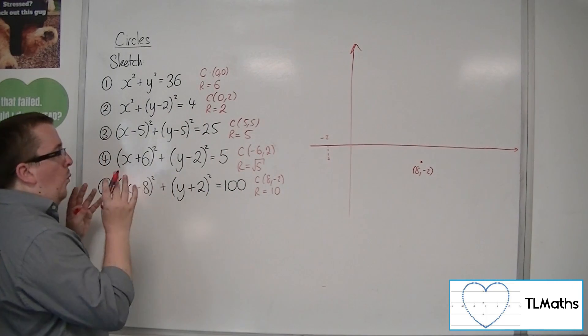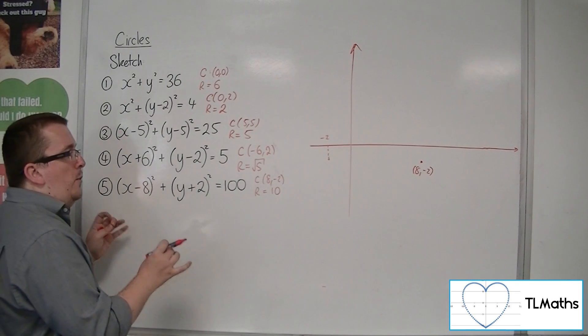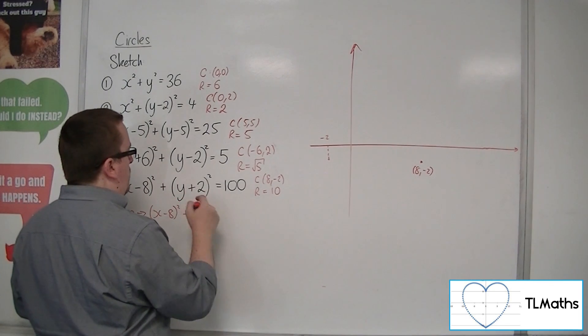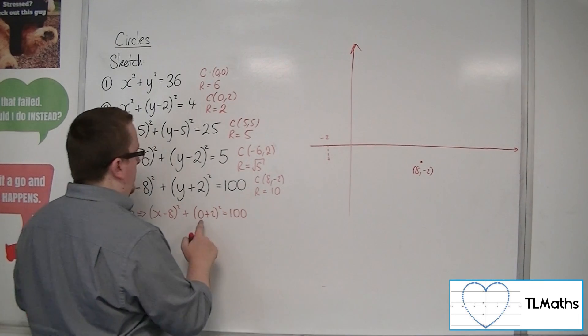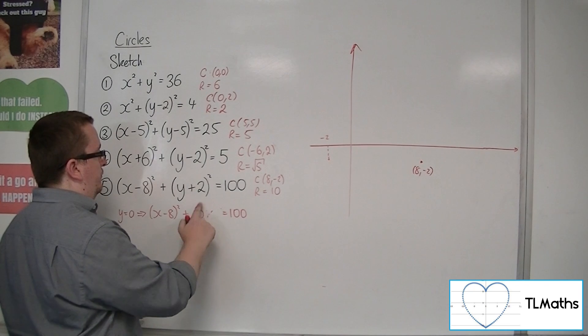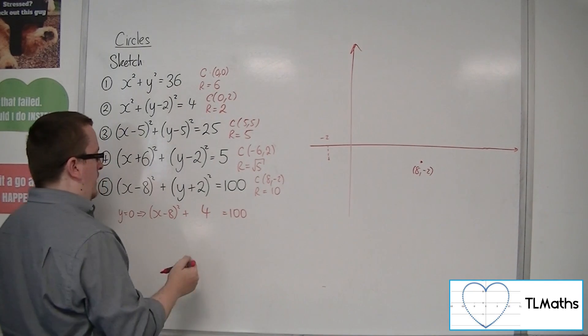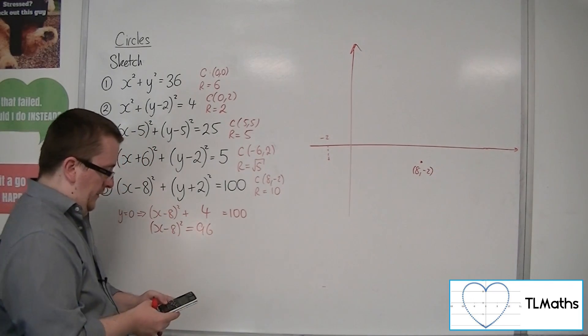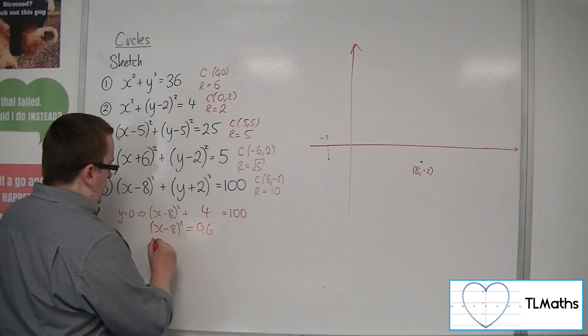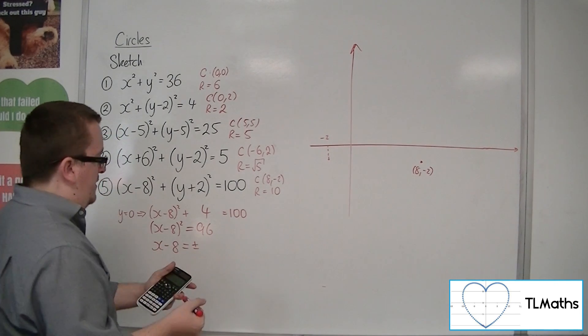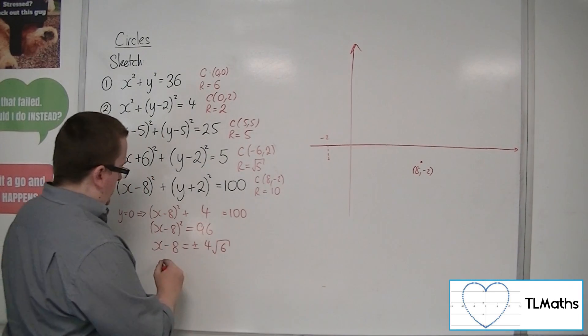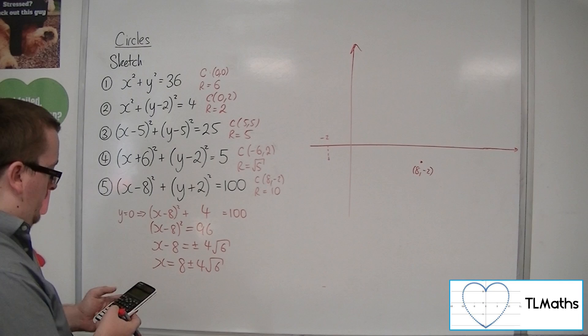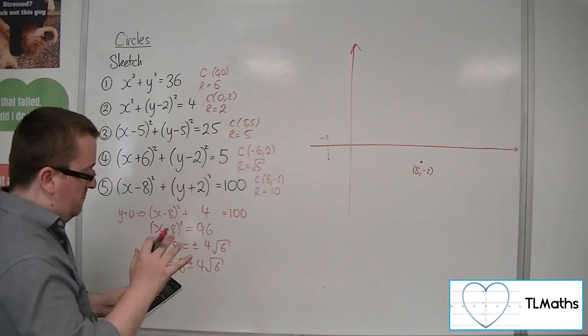So, if I put in when y is 0, that means I can find out where it crosses the x axis. So, x minus 8 squared plus 0 plus 2 squared equals 100. Now, 0 plus 2 squared is just 4. So, subtract the 4 from both sides gets me 96. I now need to square root both sides. So, x minus 8 is equal to plus or minus the square root 96 is 4 root 6. So, that means that x is 8 plus or minus 4 root 6.